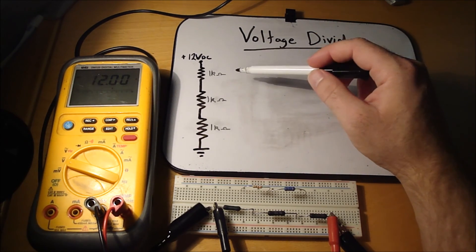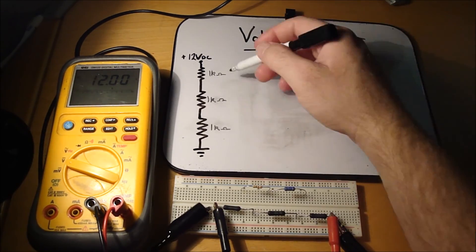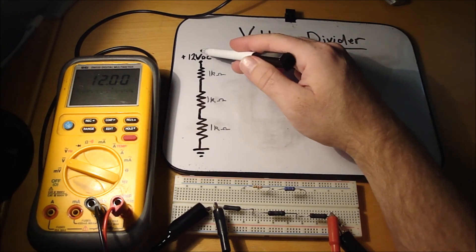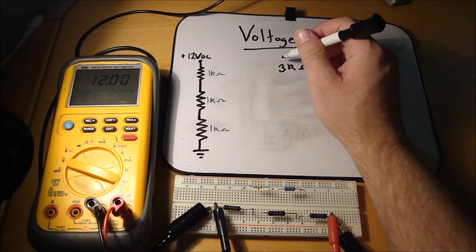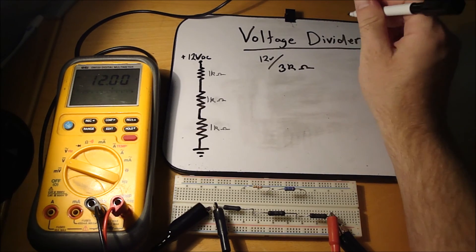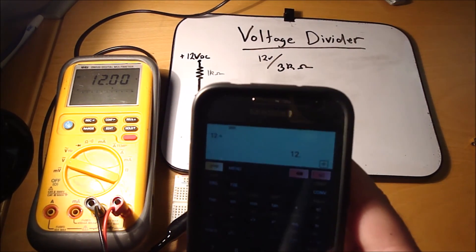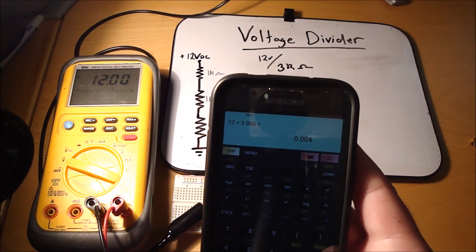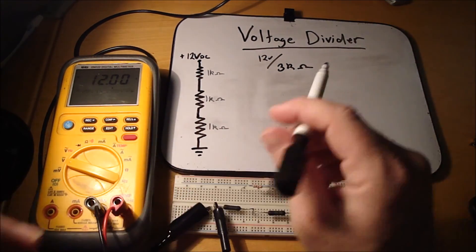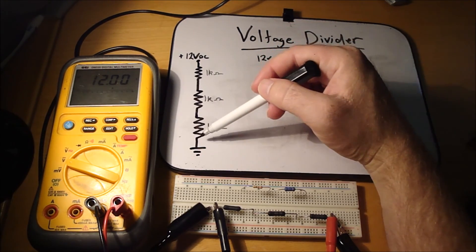To calculate the actual voltage divided across each resistor, you can use Ohm's law. First, calculate the total resistance — in series, you just add them together, so it's 3 kilo-ohms. With 12 volts supplied to the entire circuit, to calculate current you take 12 volts divided by 3,000 ohms, which equals 0.004 amps or 4 milliamps. In a series circuit, the current is the same throughout.